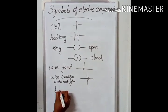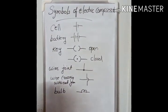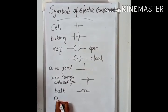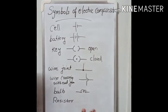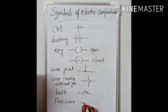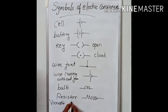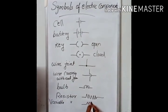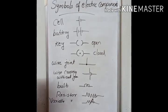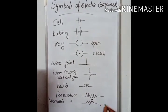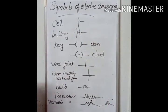You are familiar with the symbol of a bulb. Then, next one is a new component for you — that is a resistor. You will study about what is a resistor in the next topic. A resistor is denoted by its symbol. The next one is a variable resistor. Variable resistor is denoted by the resistor symbol with an arrow across it, or there is one more symbol — the resistor symbol with an arrow through it. Both show variable resistor.